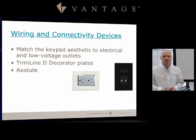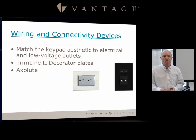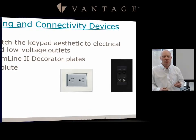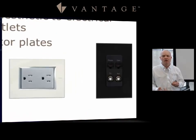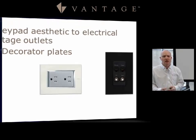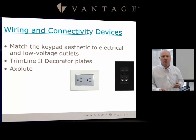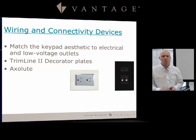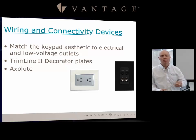Let's talk about wiring and connectivity devices. You can now match below the chair rail with certain keypads. With the EasyTouch 2 and Axolute styles, you can use the Trim Line 2 decorator plates for low voltage outlets and also high voltage electrical outlets. The same goes with the Axolute, where you can have the European sideways style with the Axolute faceplate both below and above the chair rail.